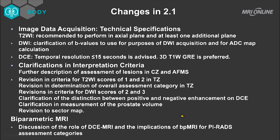Further clarifications and interpretation criteria include a description of assessment of lesions in the CZ and anterior fibromuscular stroma — one of the biggest and most important changes. In our experience, the overwhelming majority of lesions in the TZ have been over-called. There are revisions to criteria for T2 weighted imaging scores for score 1 and score 2 in the TZ area, revision of the overall assessment of aggressive, intermediate, or not aggressive in the TZ area, revisions to diffusion weighted imaging scores of two and three, clarification of positive versus negative enhancement on DCE MRI, clarification and measurement of prostate volume, revision of the sector map, and a discussion of biparametric MRI.